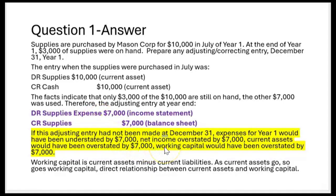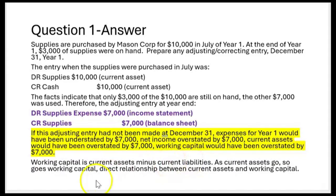And that means net income would have been overstated by $7,000 because expenses and net income have an inverse relationship. So if we understated expenses, we would have overstated net income. Then current assets, if we didn't make this entry, would have been overstated by $7,000 because the supplies account would have been $7,000 too high. And if we overstated current assets, working capital would have been overstated by $7,000. Working capital is current assets minus current liabilities — as current assets go, so goes working capital.